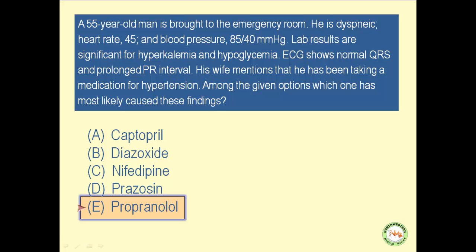How does propranolol cause hyperkalemia? Normally, epinephrine via beta-2 stimulation moves potassium into the cells in general, and into the muscle cells — which assume a very high mass in the body — in particular. This leads to hypokalemia. Propranolol inhibits this effect and causes hyperkalemia.